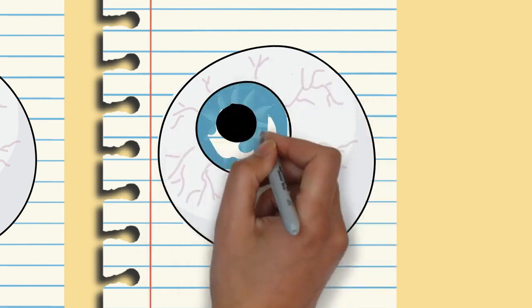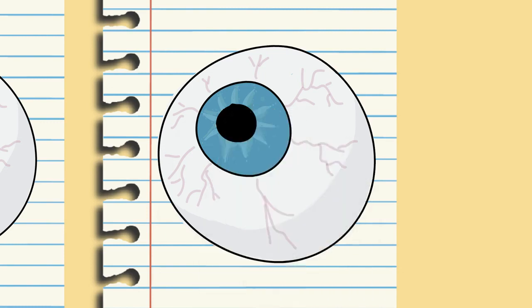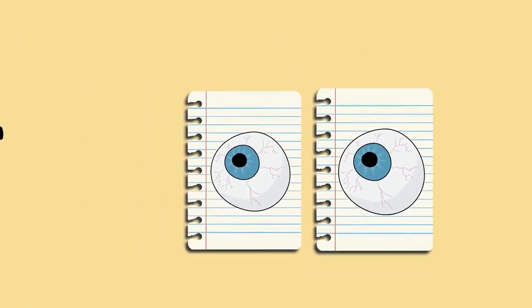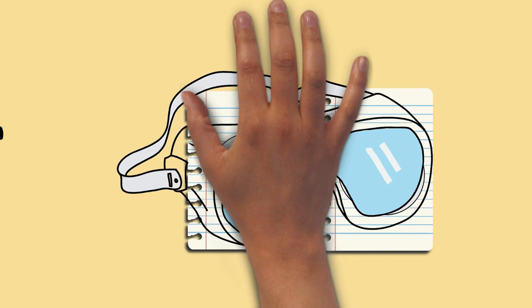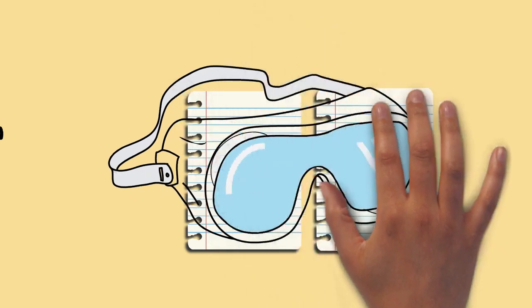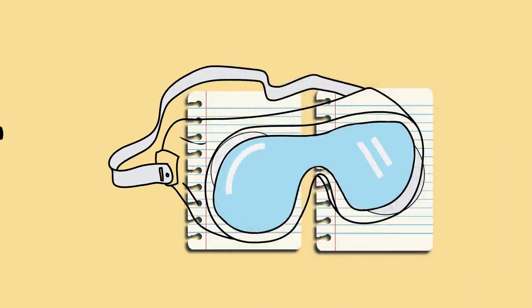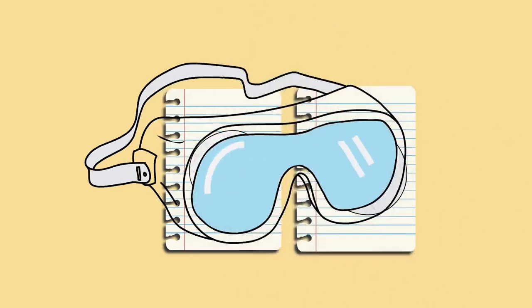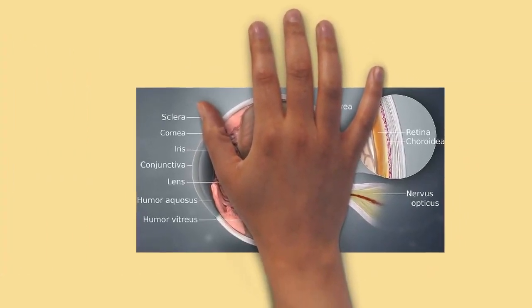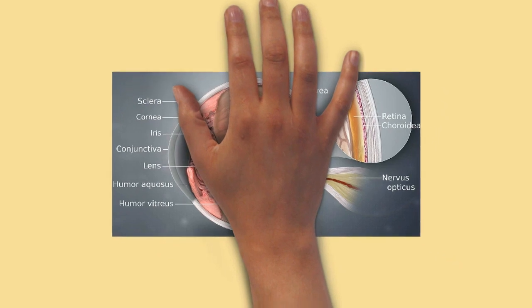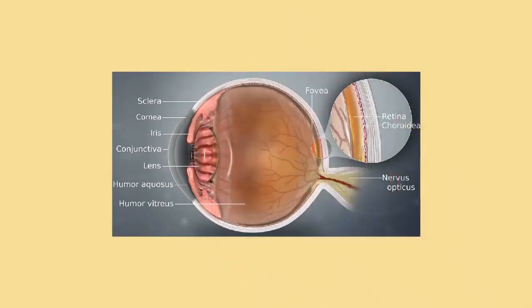The eye is made up of three coats, or layers, enclosing various anatomical structures. The outermost layer, known as the fibrous tunic, is composed of the cornea and sclera, which provide shape to the eye and support the deeper structures. The middle layer, known as the vascular tunic or uvea, consists of the choroid, ciliary body, pigmented epithelium, and iris.